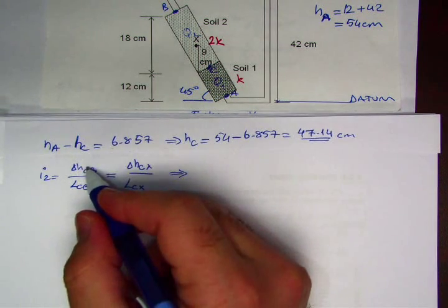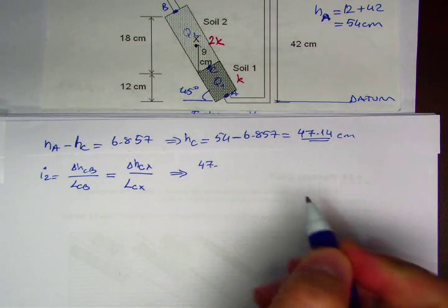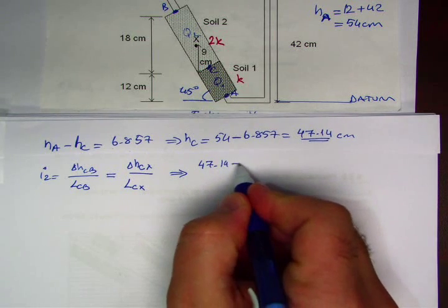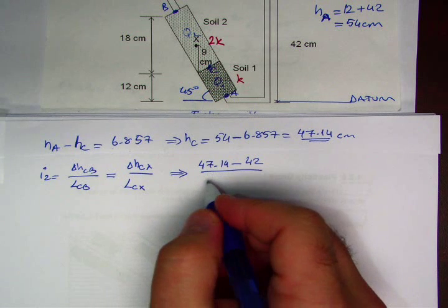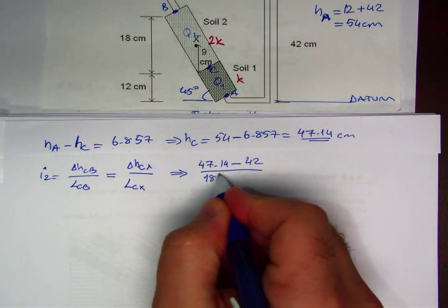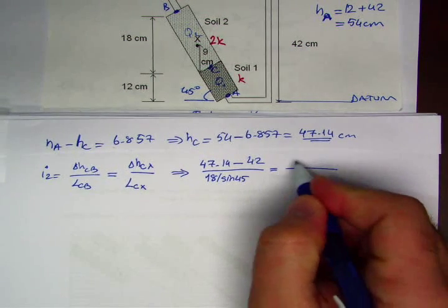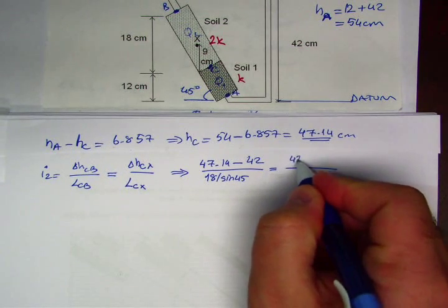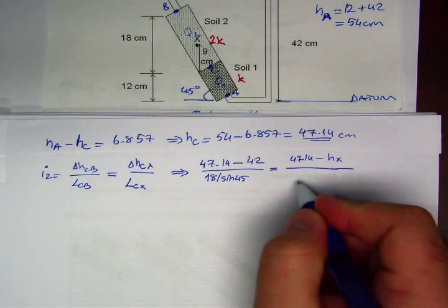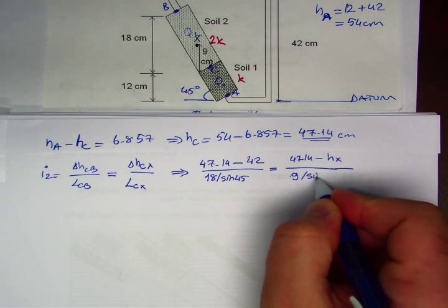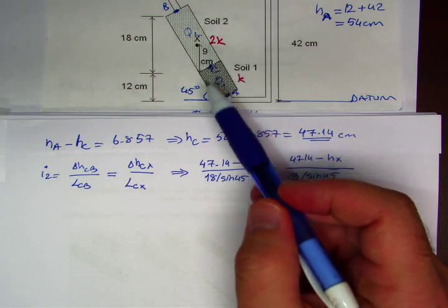So we can write this down: Delta HCB is 47.14 minus HB is 42, divided by LCB is 18. Again, HC is 47.14 minus HX, divided by 9 divided by sine 45. These two cancel out, this is 2.